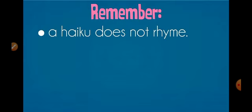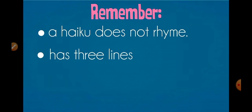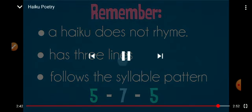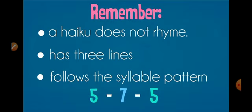So the Haiku poem depends upon the count of the syllables. We have the pattern of five, seven and five. Remember, a Haiku does not rhyme. It does not have a rhyming scheme, has three lines only and follows the syllable pattern: five, seven, five. So this is all about Haiku poems. Thank you.